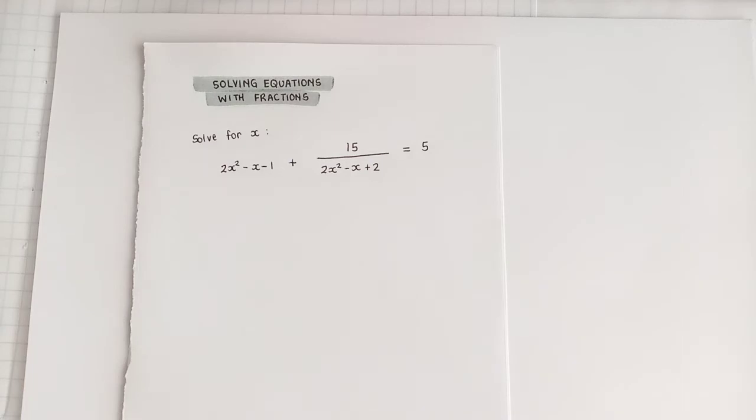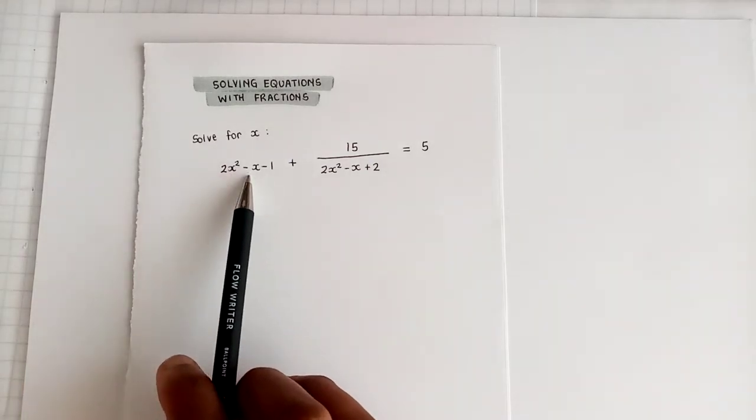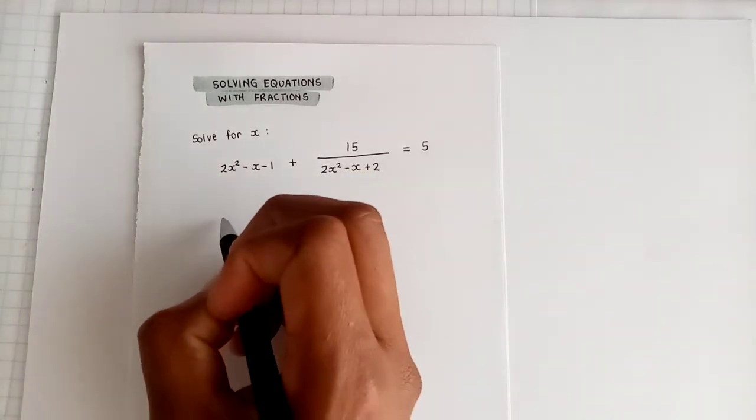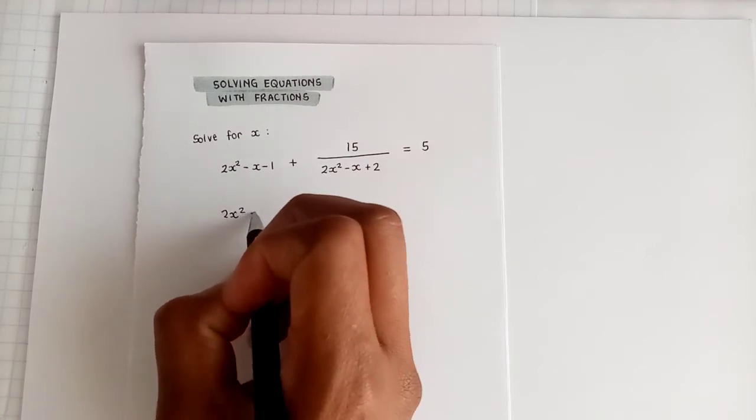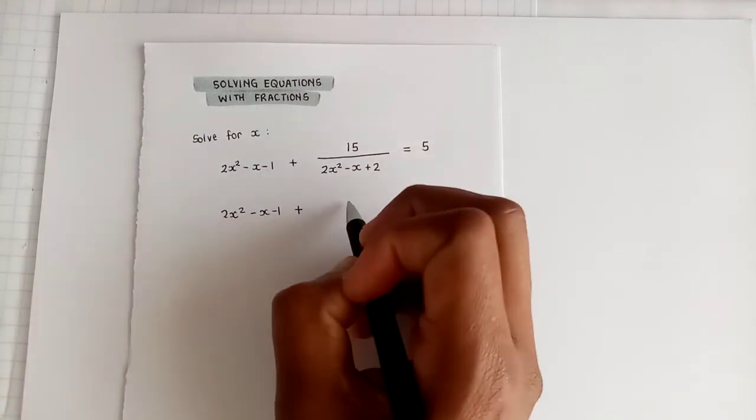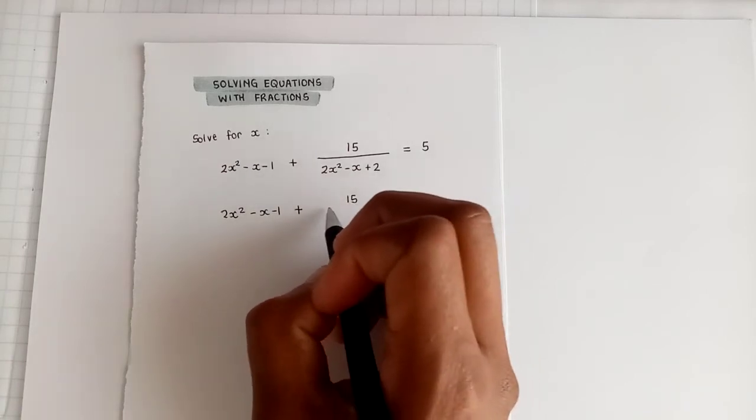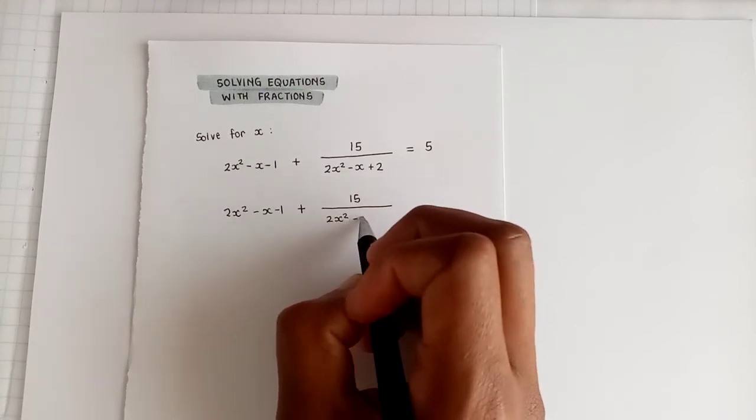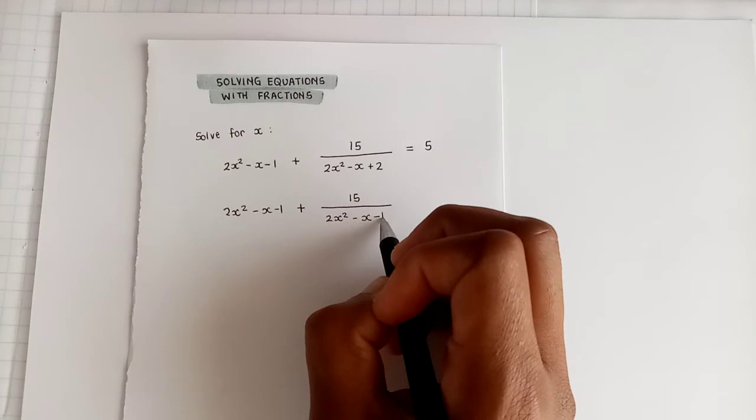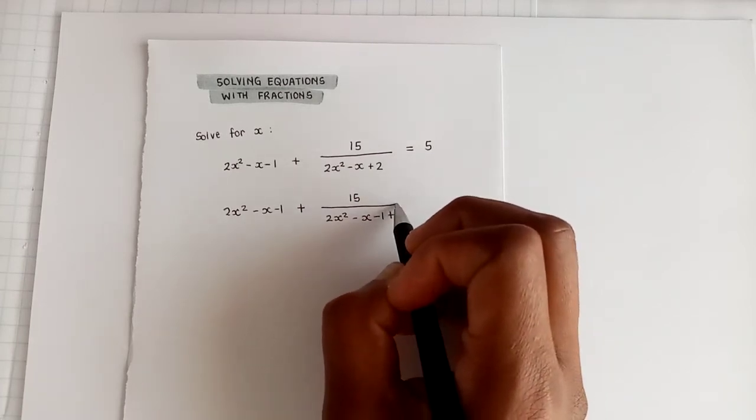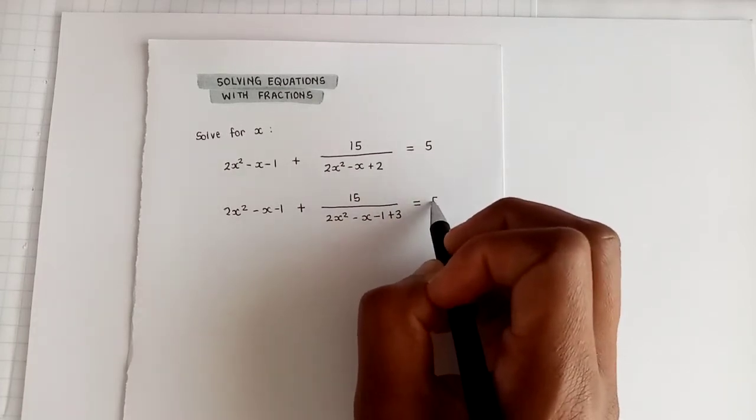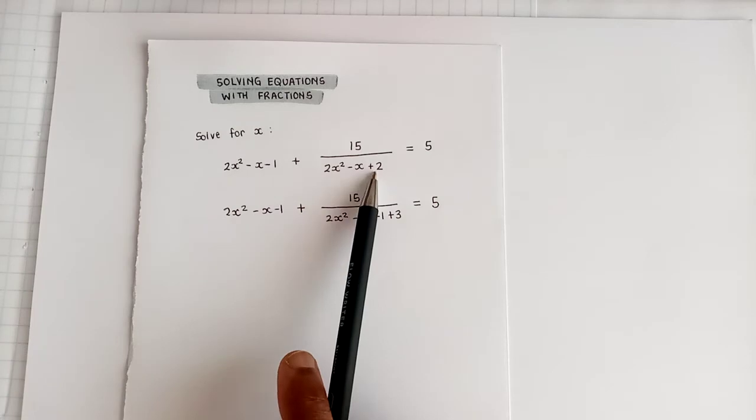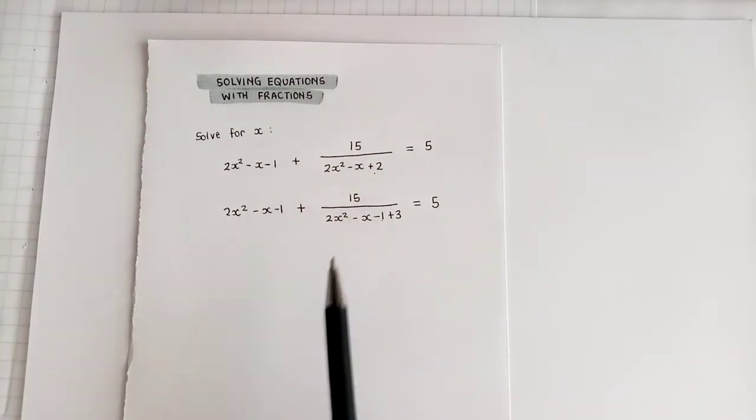So if you're going to have to make 2x² - x - 1 show up over here, you could do it like this. You would say 2x² - x - 1, and then plus, then for your fraction you have 15 divided by, now you'll get 2x² - x. Now look at this, minus 1 plus 3. Now I haven't done anything radical there or incorrect. All that I've done is that I've rewritten the positive 2 as a minus 1 plus 3.